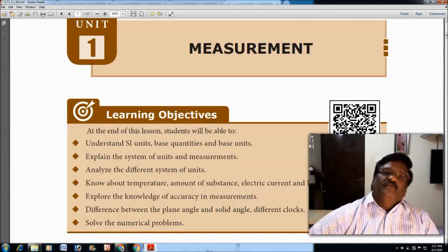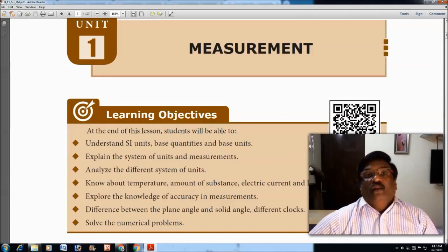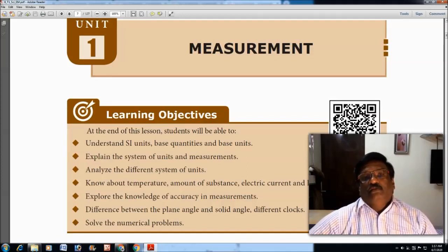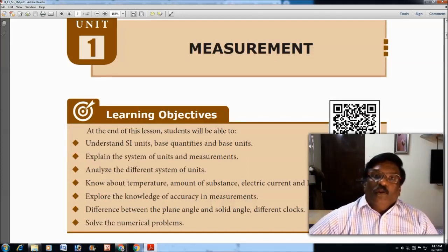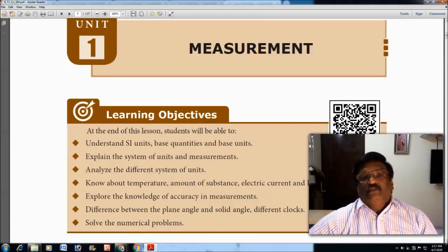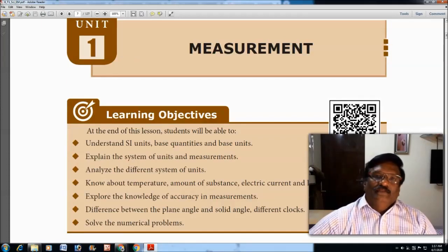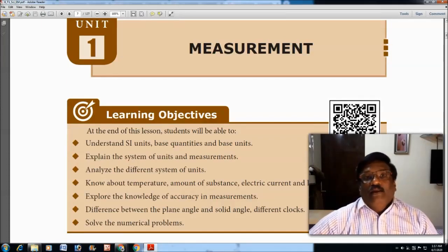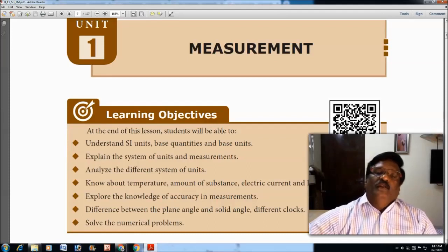When you talk about physical quantities, we divide physical quantities into fundamental and derived quantities. Fundamental quantities are those that cannot be derived from any other quantity. They stand unique, like length, mass, and time. But derived quantities are those that are derived from the fundamental quantities.